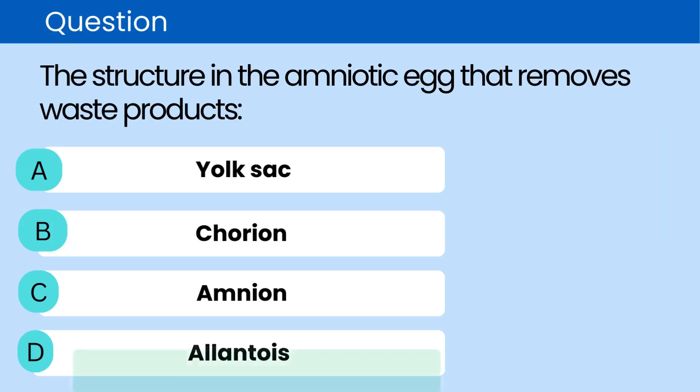The correct answer is D. Allantois. The allantois is a sac-like structure involved in the exchange of gases and the handling of liquid waste in the amniotic egg.